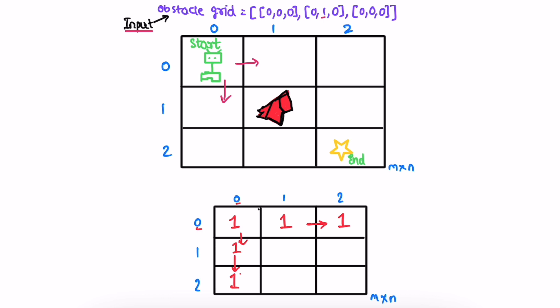The 0th row and 0th column will be our base to fill the rest of the DP array. In this example there is no obstacle in the 0th row or 0th column, so we fill all those cells with ones. If there was an obstacle in the first row or first column, you stop filling at that point and break the loop — that would mean subsequent cells also get zero, as there's no way to reach them past the obstacle. But in our original example there is no obstacle there, so we fill that row and column with ones.